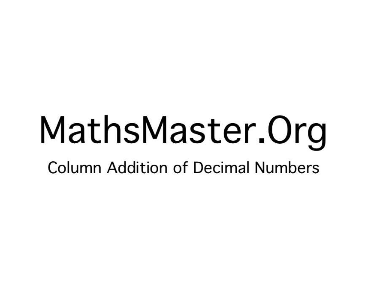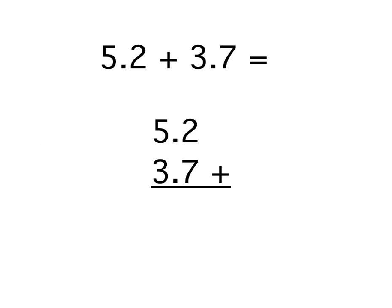Welcome to MathsMaster.org. In this lesson we're going to look at column addition of decimal numbers. Here's two decimal numbers 5.2 and 3.7. We're going to add them together.